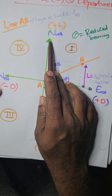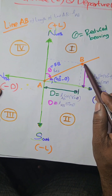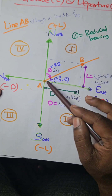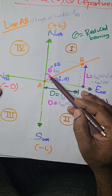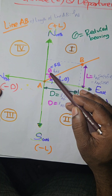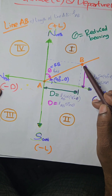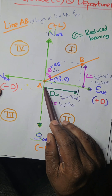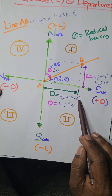Here we have four directions: north, south, east, and west. This is line AB, and this is the angle theta. Now, theta is the reduced bearing — it is not whole circle bearing. If you see here, 90 minus theta: this gives L sin(90 − θ) for one side, and L cos(90 − θ) for the adjacent side. So cos(90 − θ) equals sin θ.